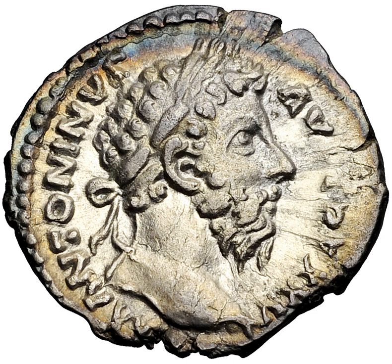The manufacture of coins in Roman culture, dating from about the 4th century BC, significantly influenced later development of coin minting in Europe. The origin of the word 'mint' is ascribed to the manufacture of silver coin at Rome in 269 BC at the temple of Juno Moneta.